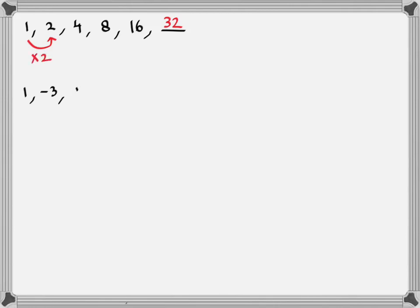So the multiplication factor in the first series is 2. Look at the next series: 1, -3, 9. The next one is -27 and the next one is 81. What is the multiplication factor? The multiplication factor in the second series is -3. 1 into -3 is -3, and -3 into -3 is 9, and so on.